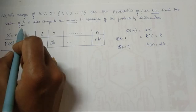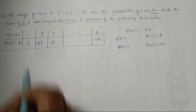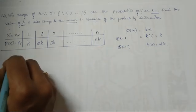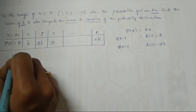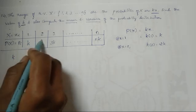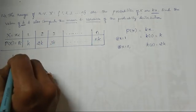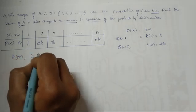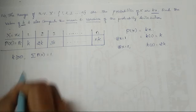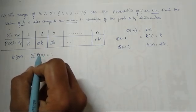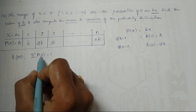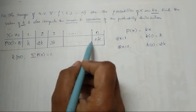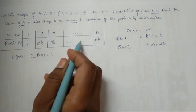Now we have to find the value of k. To find k, we use the properties: probability must be greater than or equal to 0, and the sum of all probabilities will always be equal to 1. By using these two properties we can find the value of k.